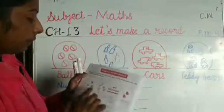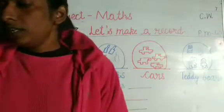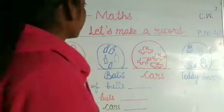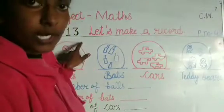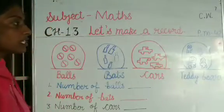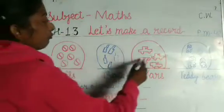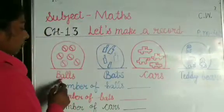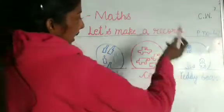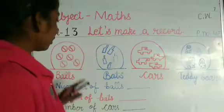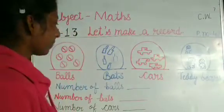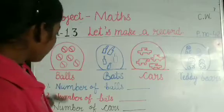You have to complete the following. As you can see on the board, there are four objects: balls, bats, cars, and teddy bears. You have to give answers to these questions.